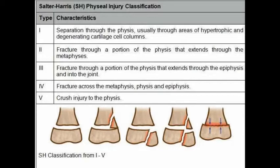Coming to the classification, there are five types of fractures according to Salter-Harris. In Type 1, there is separation through the physis or growth plate, usually through areas of hypertrophic and degenerating cartilage cell columns. In Type 2, there is fracture through a portion of the physis that extends through the metaphysis. In Type 3, the fracture extends through the epiphysis and into the joint. In Type 4, there is a fracture across the metaphysis, physis, and epiphysis. In Type 5, there is a crush injury to the physis.